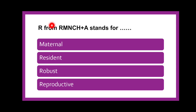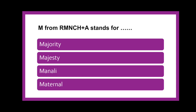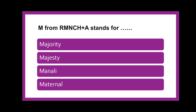Next question: R from RMNCH+A stands for dash — maternal, resident, robust, or reproductive? The correct answer is reproductive. As discussed earlier, RMNCH+A is the main focus of the National Rural Health Mission, and R stands for Reproductive. Next: M from RMNCH+A stands for dash — majority, majesty, Manali, or maternal? The correct answer is maternal.